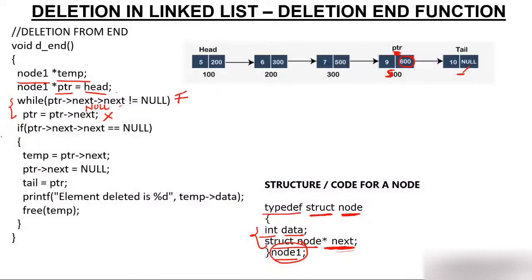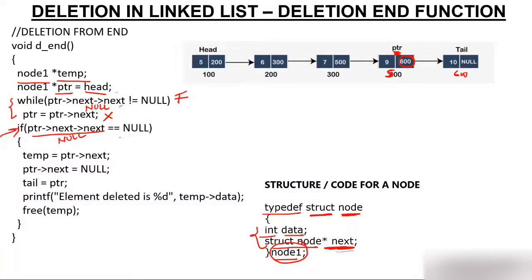After exiting the loop, PTR is just behind the node we have to delete — it is at the second-last position, right before the tail node. PTR->next->next is null, confirmed: PTR->next is 600, and next of 600 is null. So the if condition becomes true and we go inside the if block.